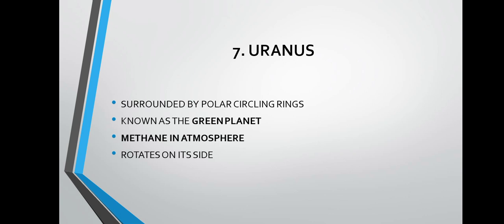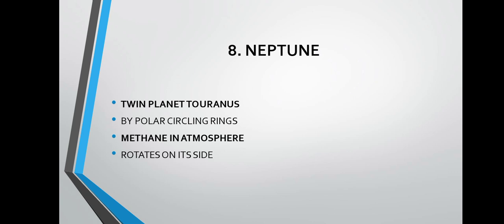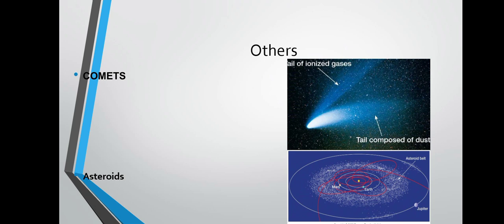Uranus is surrounded by polar circling rings and is also known as the green planet. It has methane in its atmosphere and rotates on its side. Neptune is the twin planet to Uranus, also with polar circling rings and methane in its atmosphere.